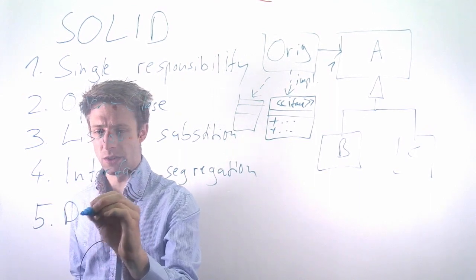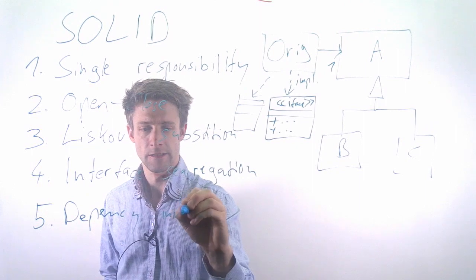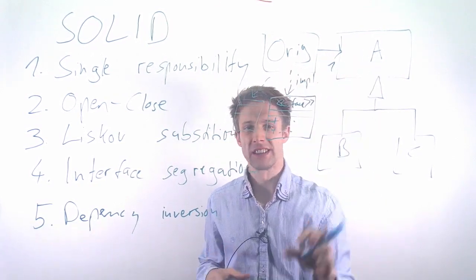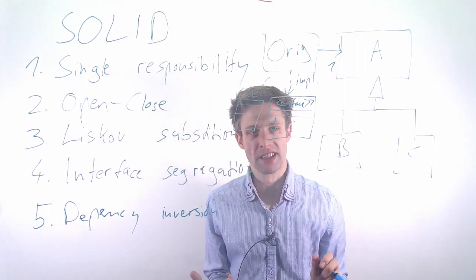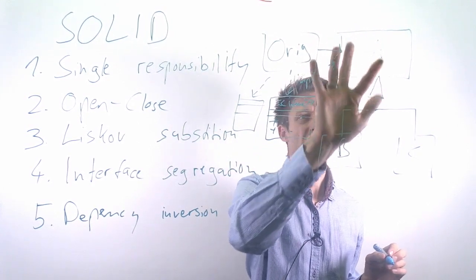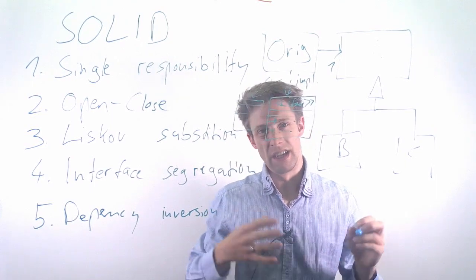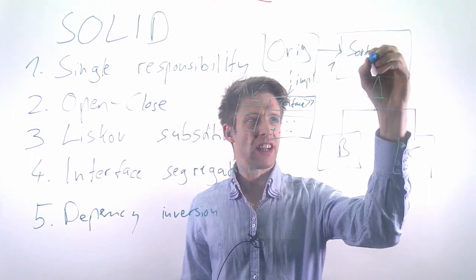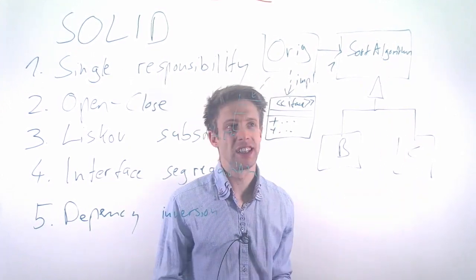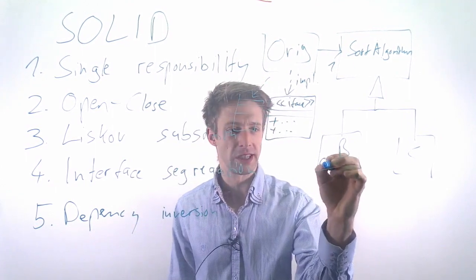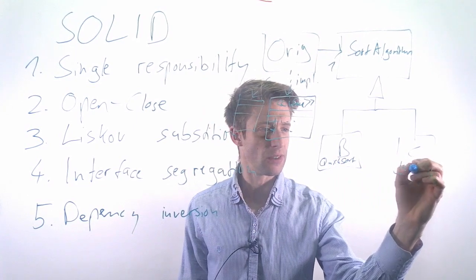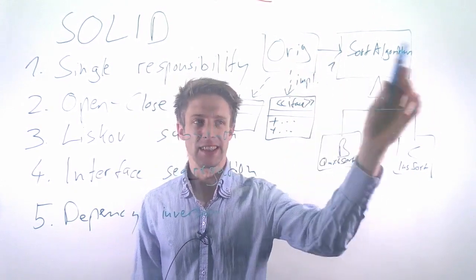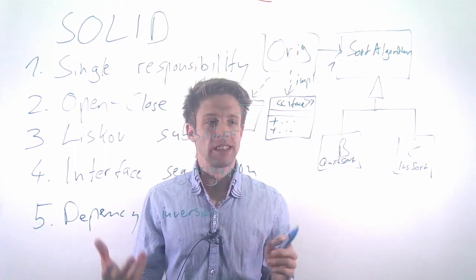The fifth and last principle is dependency inversion. If your class depends on something else, it should depend on something rather abstract. For example, imagine your class is used for processing data and has to sort data. There are lots of different sorting algorithms—quicksort, insertion sort, and so on. The dependency inversion principle says you should depend on the abstract thing, just some kind of sorting algorithm, and then whoever uses your class decides exactly which algorithm to use, instead of depending on a very specific implementation.